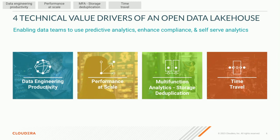Some pretty cool technical stuff. And some of you have probably seen an even deeper dive into that metadata layer and how it makes things more effective. But I want to take it up a level and say — who cares? What does this really give us? Bigger, better, faster, more is only interesting if it pays us dividends. We find four key areas where Iceberg capability applied to an open lake house architecture gives us data engineering productivity, performance at scale, multifunction analytics, and storage deduplication and time travel.